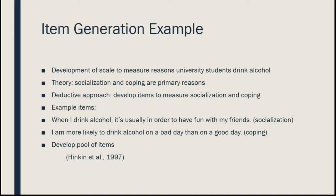Here are a couple of example items we might develop for a scale measuring reasons university students drink alcohol. A socialization item might read: 'When I drink alcohol, it's usually in order to have fun with my friends.' A coping item might read: 'I'm more likely to drink alcohol on a bad day than on a good day.' We'd develop a whole pool of items — if we want a 15 to 20 item scale, we might develop 30, 40, or 50 items, then pick the best ones.